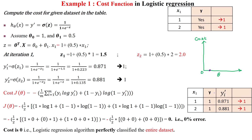The cost function for logistic regression is to be calculated for a given dataset which has a single feature and actual output capital Y with sample number 1 and sample number 2. The first sample has actual output S, encoded as 1. The second value is also S, also encoded as 1, because it is a categorical value. Categorical values are encoded into numerical values. These are the actual output encoded values, and we have to apply logistic regression and calculate the cost function value.